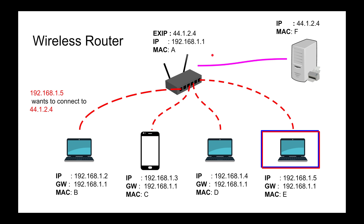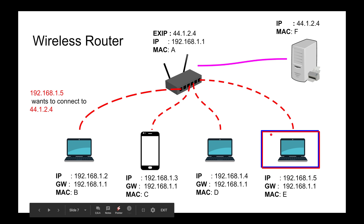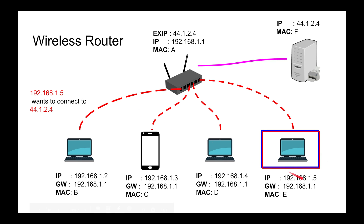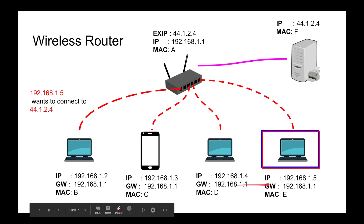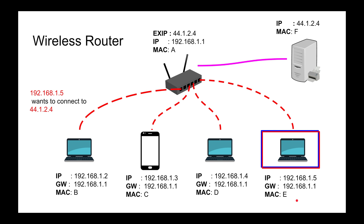Let's illustrate that with a picture. This is the shady public Wi-Fi, this is you, and these are three shady people. This is where you want to connect — say Bank of America. This is your private IP address, this is the Starbucks gateway address, and this is your MAC address. This is very important because we're going to talk about ARP spoofing.